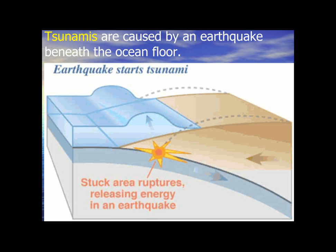Tsunamis are a series of really long waves caused by the sudden displacement of the ocean. Usually it's the result of an earthquake near the ocean floor, but it can also be a landslide. If we were to have one here in Virginia, it would most likely be because of a landslide. The force creates a wave that radiates outward — not in one direction, but in many directions — and sometimes it can cross the entire ocean basin.